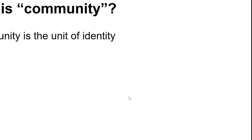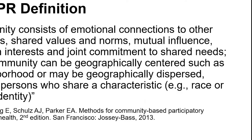Heather dives into the definition of 'community.' From a CBPR perspective, community consists of emotional connections to other members, shared values and norms, mutual influence, common interests, and joint commitment to shared needs. Community can be geographically centered — such as a neighborhood — or geographically dispersed, such as persons sharing characteristics like race or sexual identity. One useful concept from CBPR is 'community as the unit of identity.'